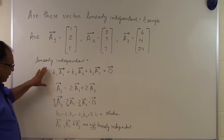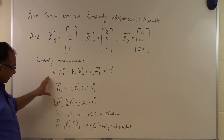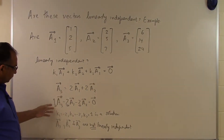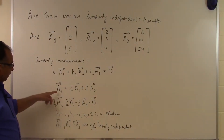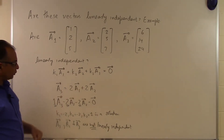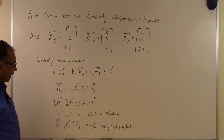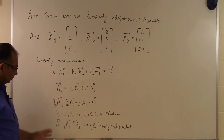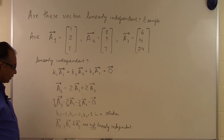The question arises: this conclusion was possible because of an observation that A3 = 2A1 + 2A2. How can we determine this if we are not able to observe it directly? Let's see how that is done systematically.